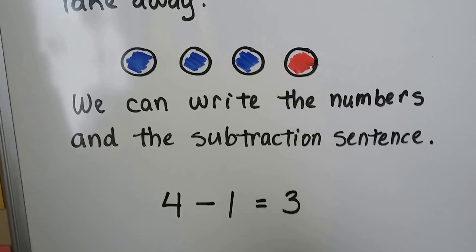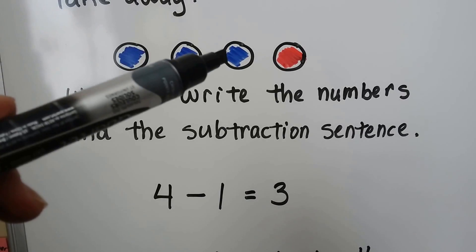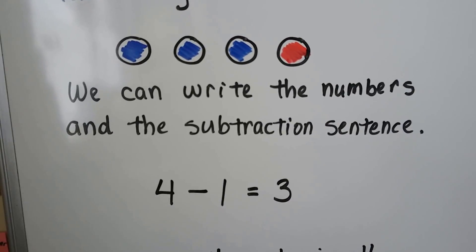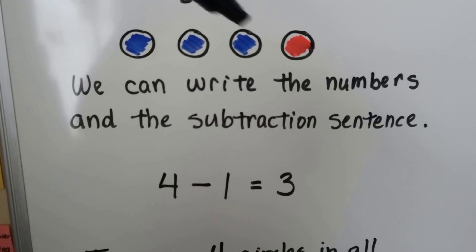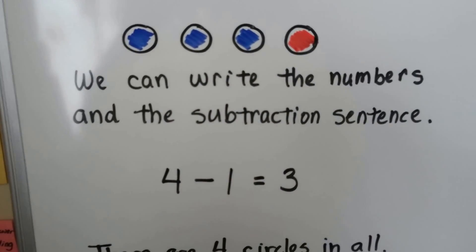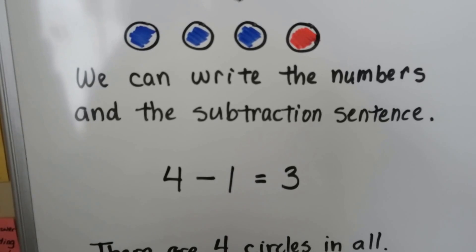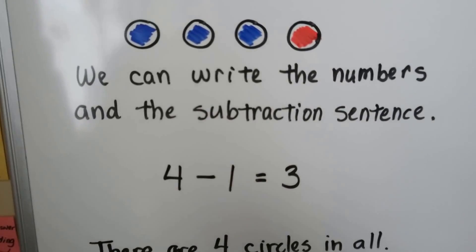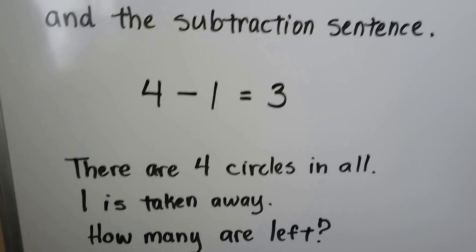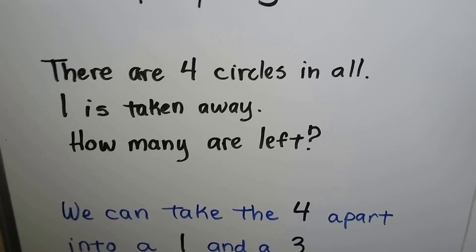We have four circles — three are blue and one is red. If we have four circles and we take one away, we can make the one we're taking away red. We can see there are three blue circles left. There are four circles in all, one is taken away. How many are left?